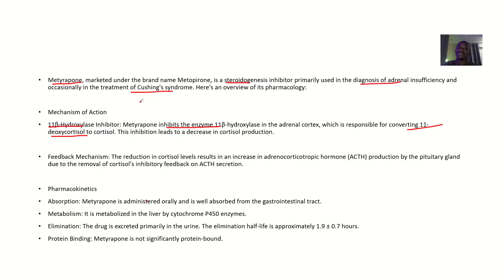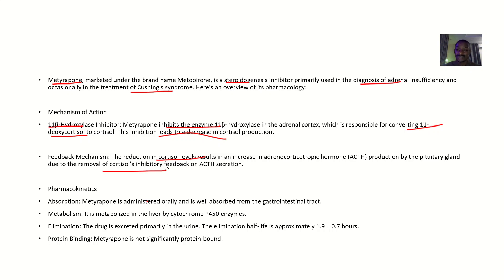This emphasizes its application in treating Cushing's syndrome, as it stops the production of excess cortisol, leading to a decrease in cortisol production. The reduction in cortisol levels results in an increase in adrenal corticotropic hormone (ACTH) production by the pituitary gland, due to the removal of cortisol's inhibitory feedback on ACTH secretion.